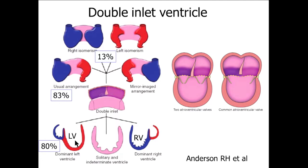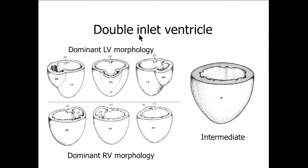The most important feature is to differentiate the morphologic characteristics of the dominant ventricle. Around 80% of patients have a dominant morphological left ventricle. In double inlet ventricle, when the dominant ventricle is left ventricular morphology, the incomplete or rudimentary morphological right ventricle is always in the anterior superior aspect of the ventricular mass. If the dominant ventricle is morphologically right ventricle, the rudimentary morphological left ventricle is always in the inferior posterior aspect.